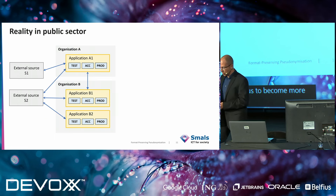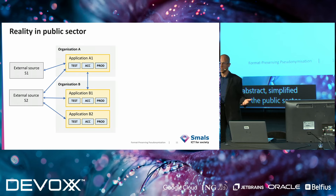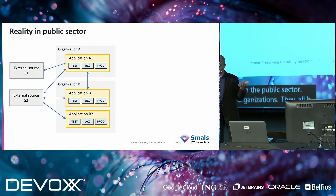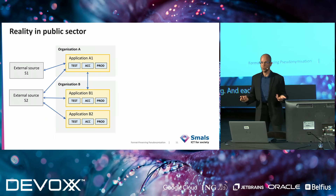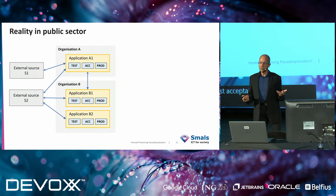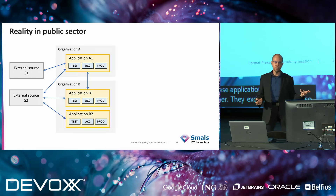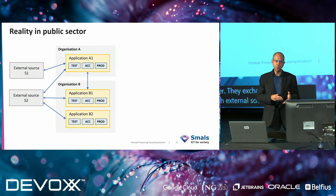Here you see an abstract, simplified overview of the reality in our sector — the public sector. We have several public sector organizations, each with one or more application services. Each of these applications has at least a test, acceptation, and production environment. These applications communicate with each other and exchange personal data, often also with external sources. This happens from the production environment, but also from acceptation environments, and less from test environments.